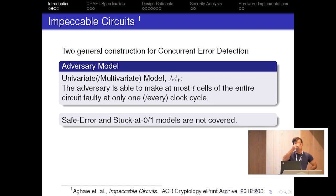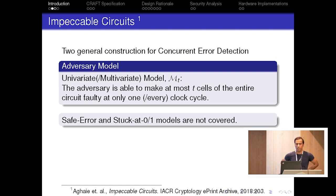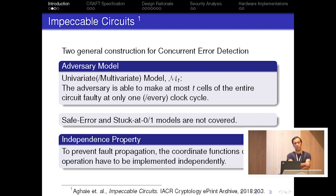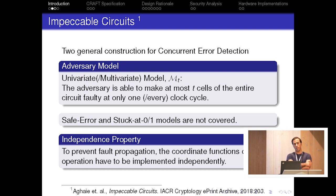To make it clear, SFA safe error or SIFA-type attacks are not covered by this countermeasure and they need some extra countermeasure to be protected. One important result from that paper was the independence property, which says that to prevent fault propagation, the coordinate function of each operation has to be implemented independently.